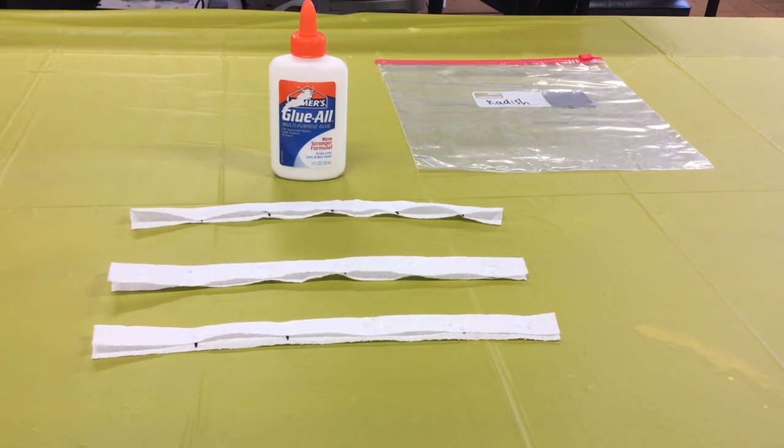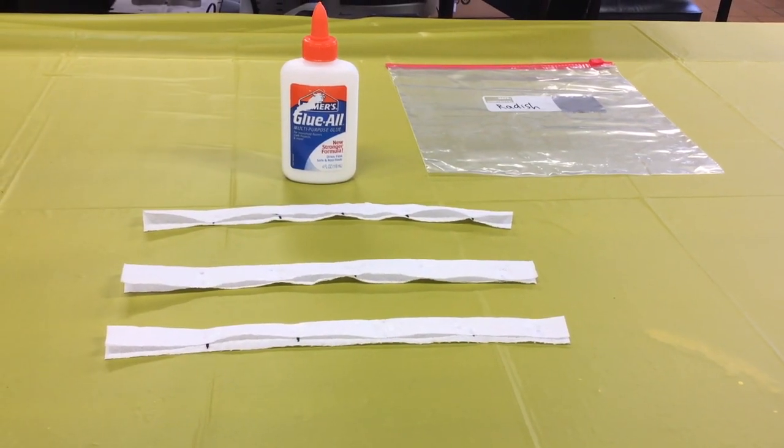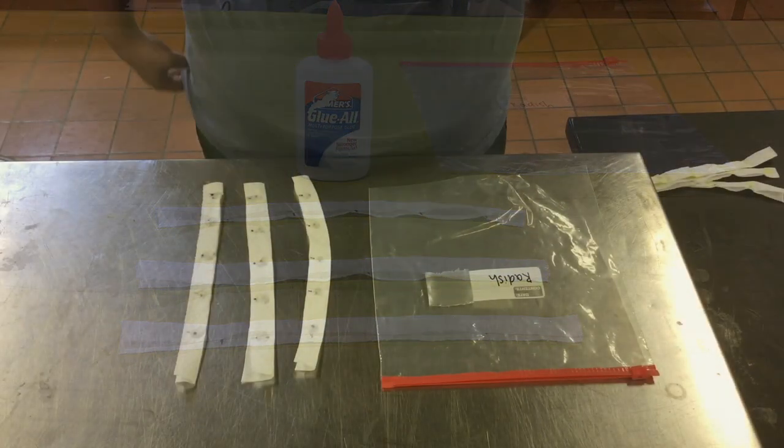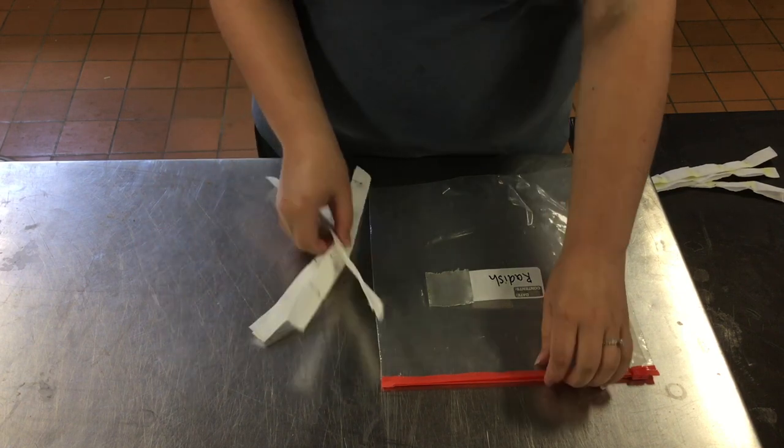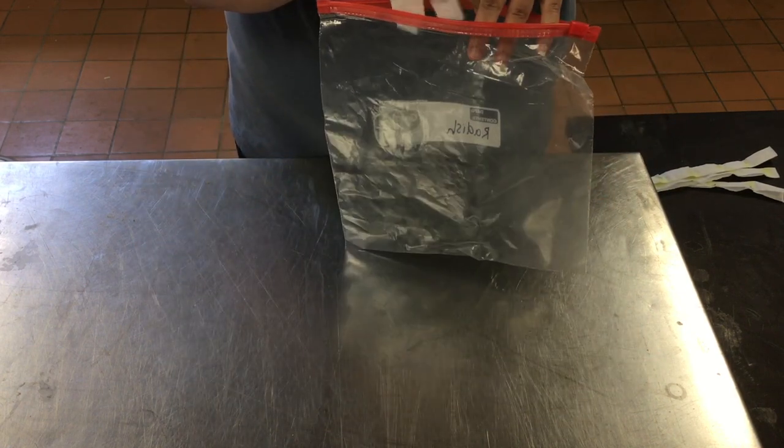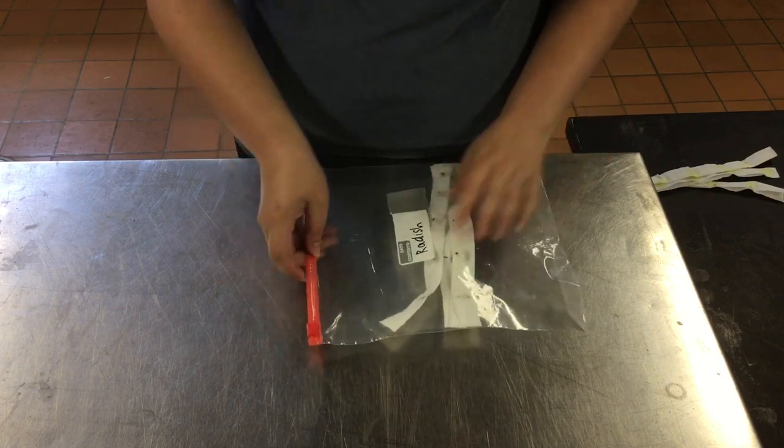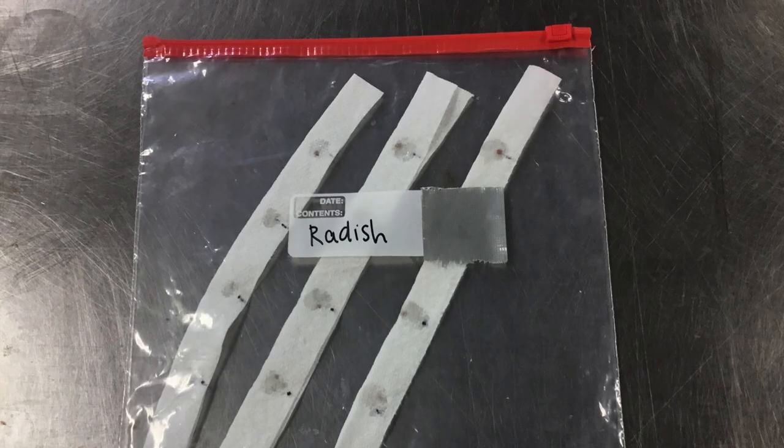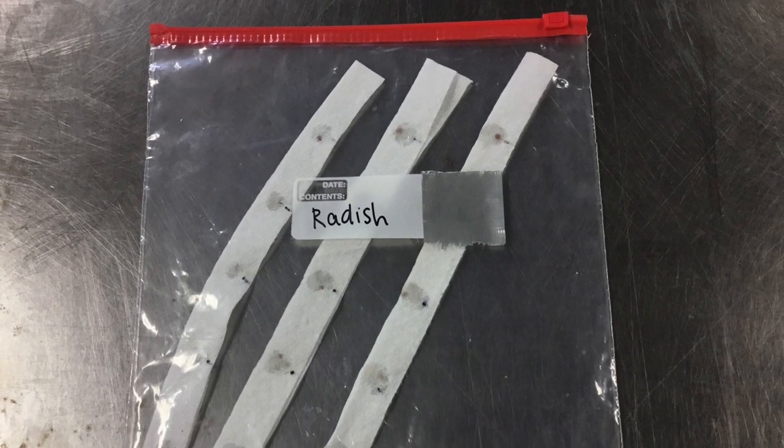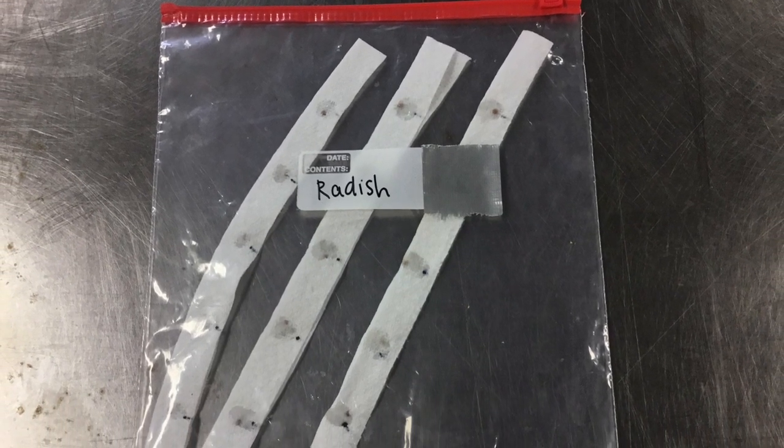Leave your seed tape out at least overnight until it has completely dried. Once it has dried, place your seed tape in an airtight container such as a plastic bag. Remember to use your permanent marker to label your container with the seed type. Store this bag in a cool and dry location until you're ready to plant.